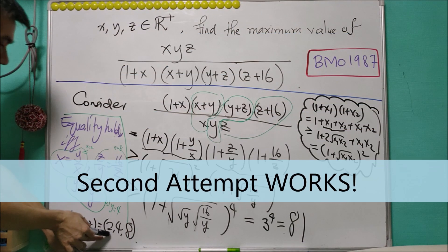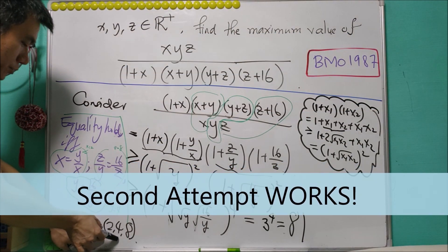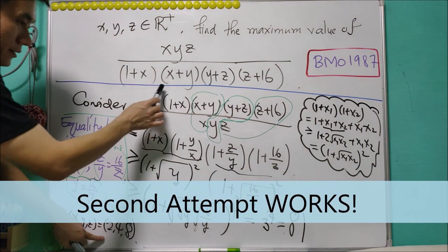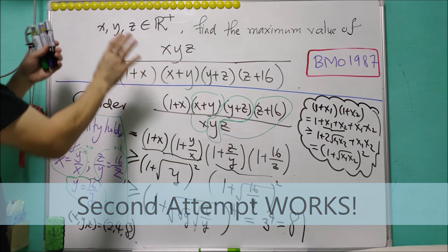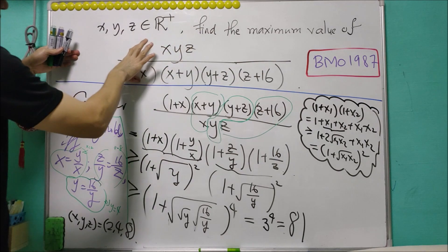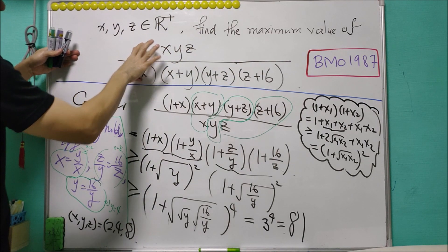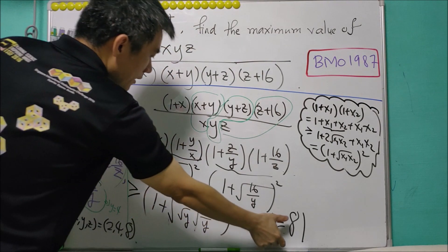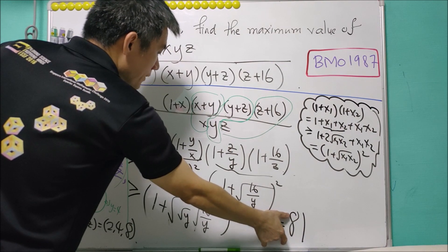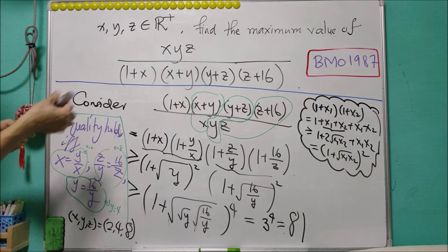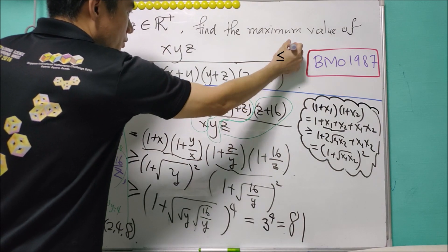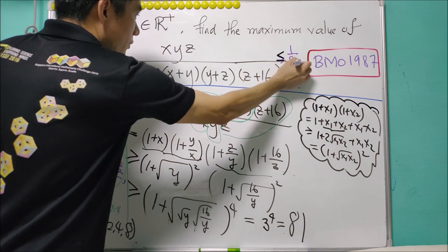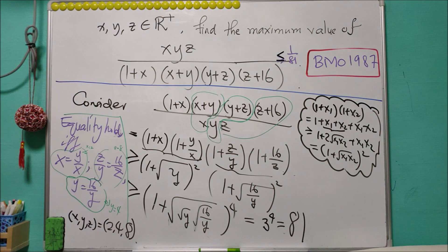When we substitute X = 2, Y = 4, Z = 8, we get the reciprocal expression equals 81. Back to the original question: the maximum for this expression will be the reciprocal of the minimum. Therefore, the maximum value is 1/81.